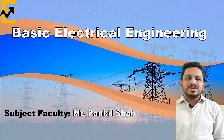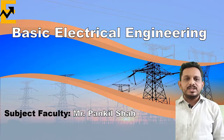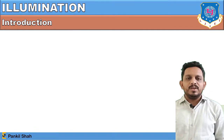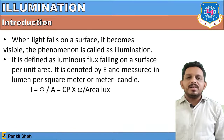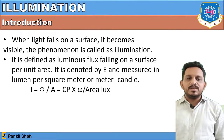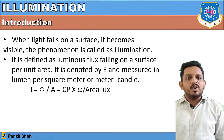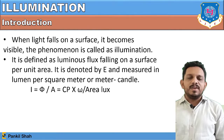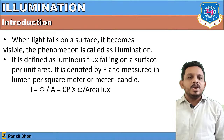Welcome to the video lecture of Basic Electrical Engineering. In today's lecture we will see the term illumination and some phenomena related to it. Illumination means whenever light falls on any object or surface, that object or surface is visible. It is defined as the luminous flux falling on a surface per unit area: I = φ / A. Its unit is lumens per square meter, and illumination is denoted by E or I.